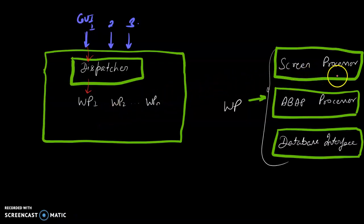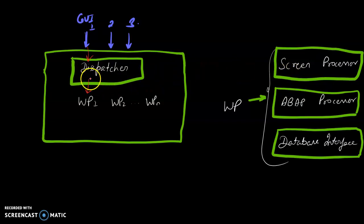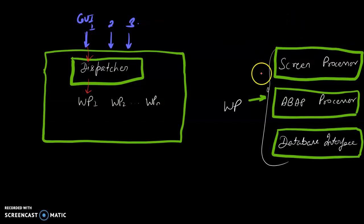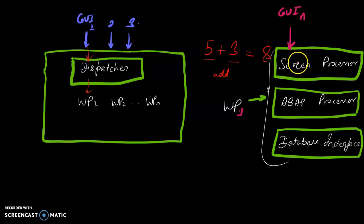The screen processor works as follows: the dispatcher first connects the input with the work process. Once the screen processor takes over communication with the GUI or with the user, it relieves the dispatcher and directly connects with the user. So the screen processor directly connects with the user.